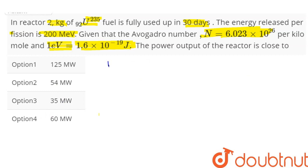So we are given mass of uranium-235, M equal to 2 kilograms, and it undergoes fission and is used up fully in 30 days. We need to find the power output of the reactor.